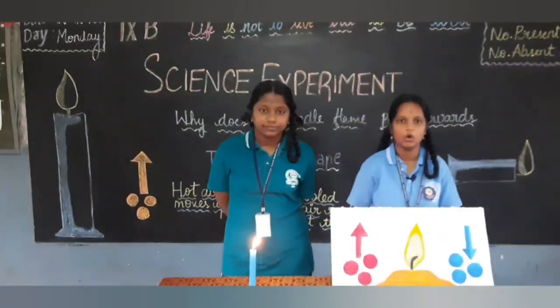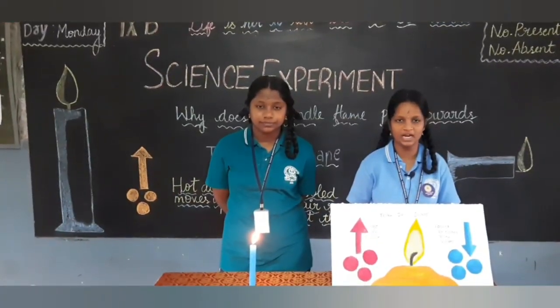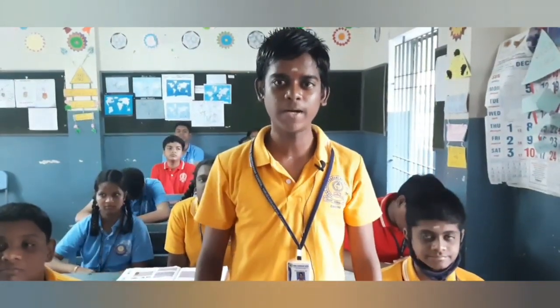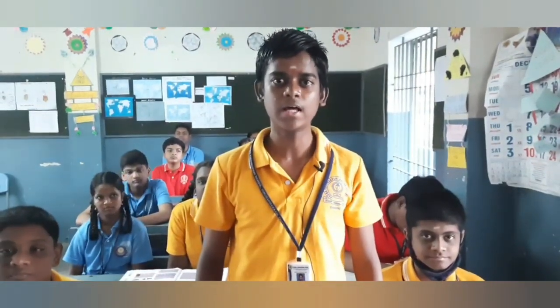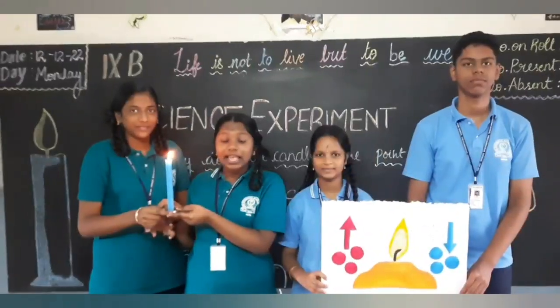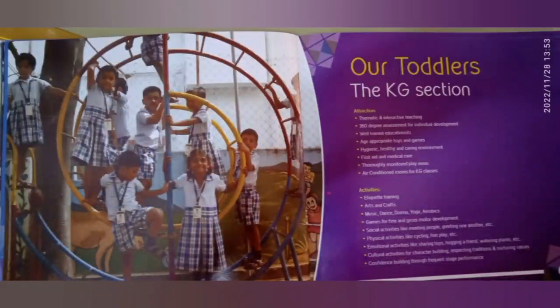Excellent. What is the reason for the glow of candle in the upward direction? The continuous movement of hot air going up and displacing the cooler air down to the side causes the glow of candle in the upward direction. Awesome. Thank you.